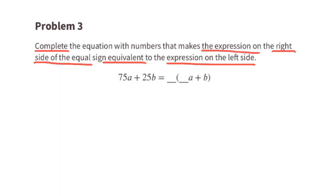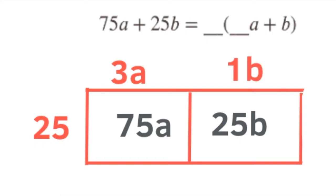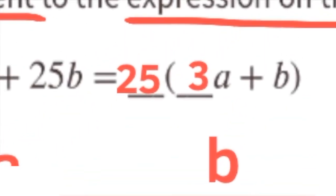Problem number three: complete the equation so the right side is equivalent to the left side. The greatest common factor is 25, so we write 25 on the outside of the boxes. 25 times 3a equals 75a, and 25 times 1b equals 25b. So the new expression is 25 times the quantity 3a plus b.